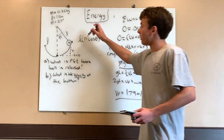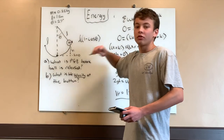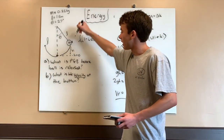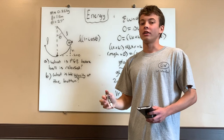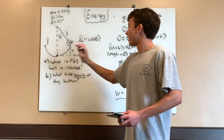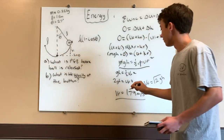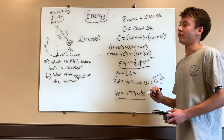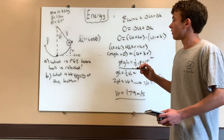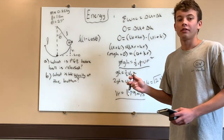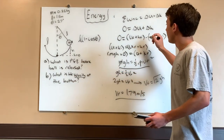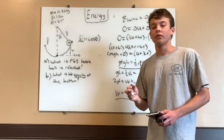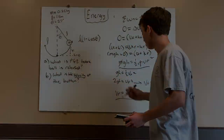So once the ball is released from rest it will travel down gaining kinetic energy, and right at the bottom it will have a final velocity of 1.79 meters per second. This problem helped relate kinetic and potential energy, showing how mechanical energy is conserved.